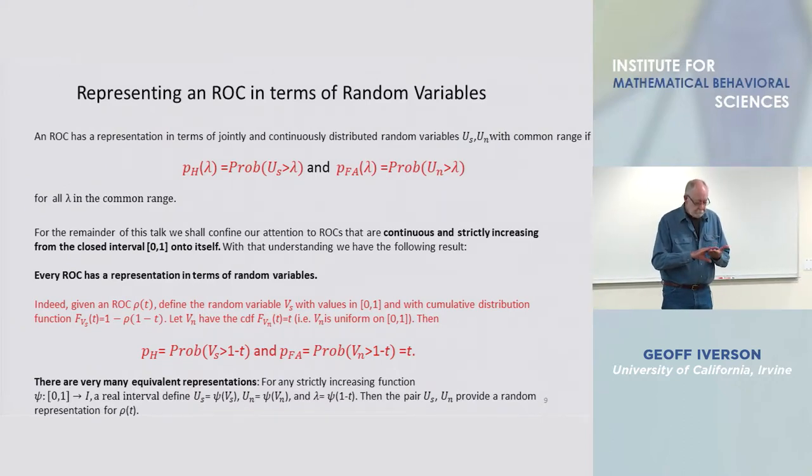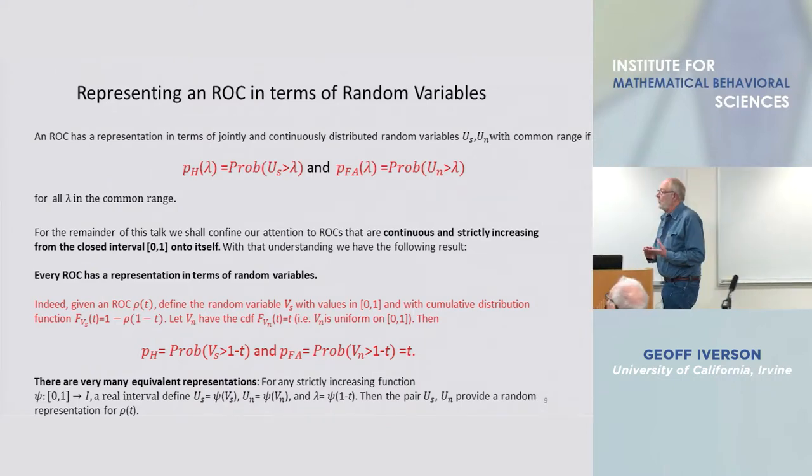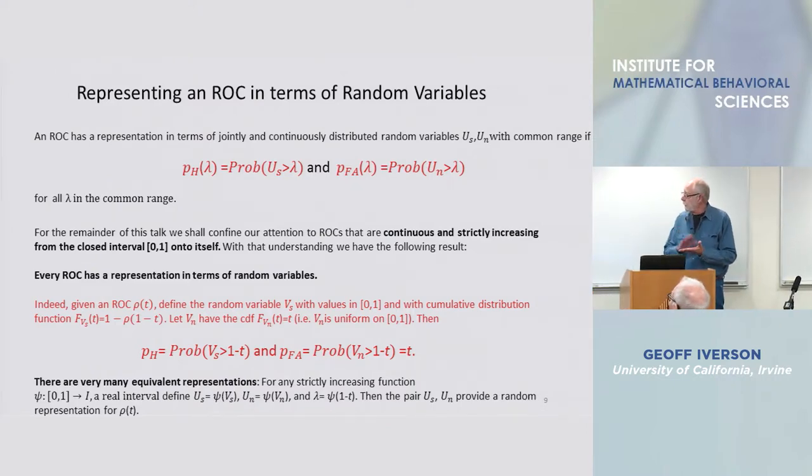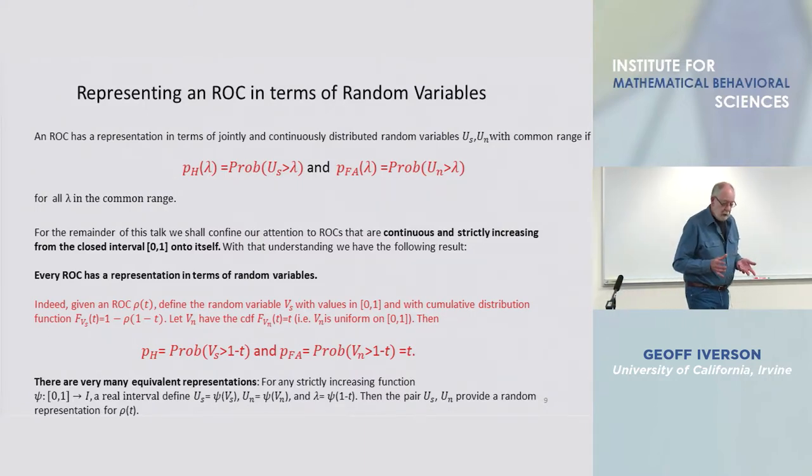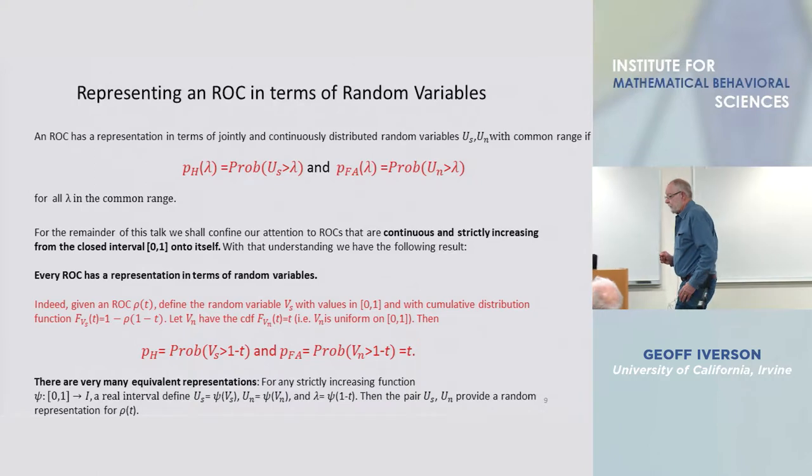There is a representation of an ROC in terms of random variables with a common range that is the unit interval itself, zero one. All you have to do is to take the noise random variable as uniform.